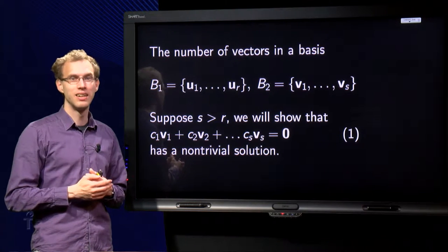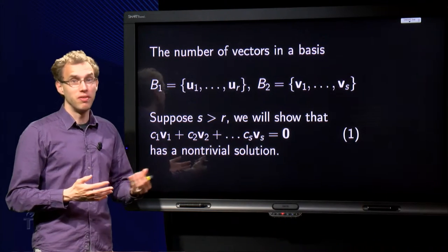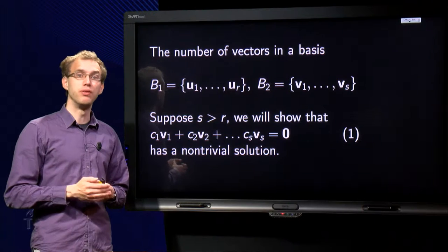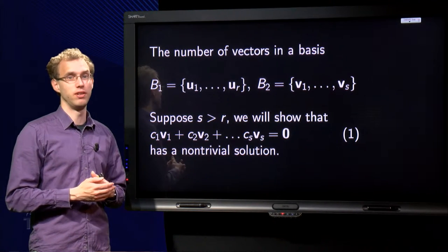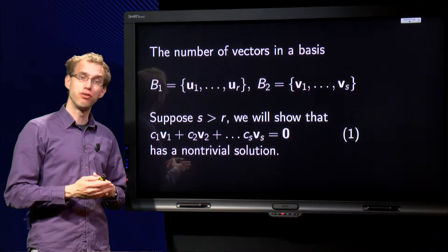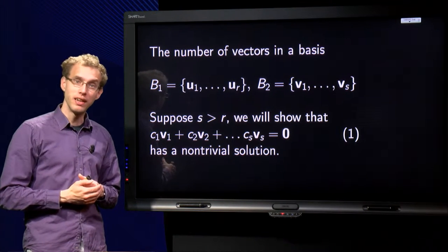But why is that? Intuitively this might be clear to you. If you do not choose enough vectors, you cannot reach all points in the subspace. And if you put too many, the set becomes dependent.